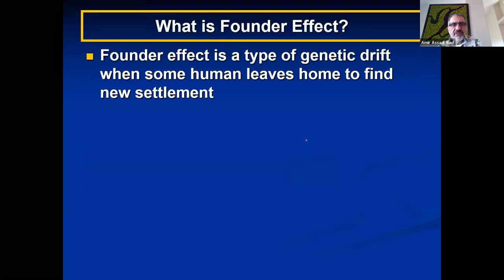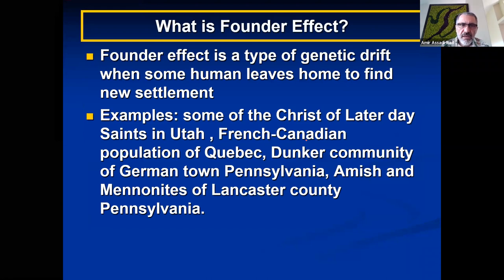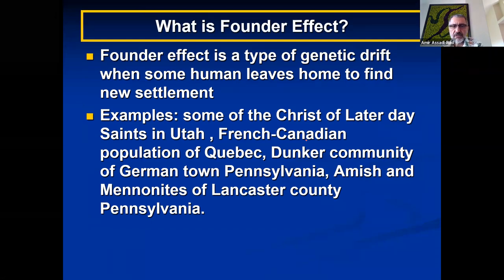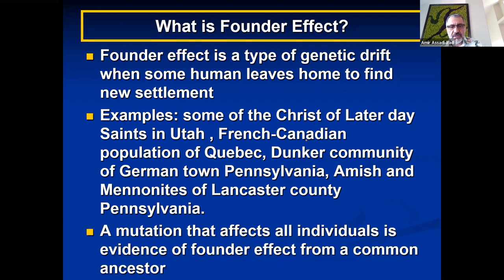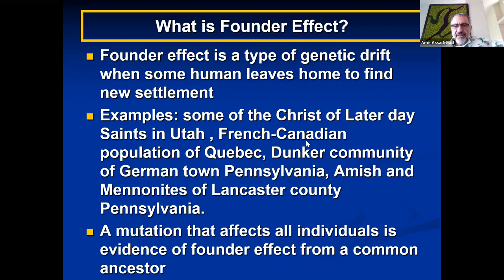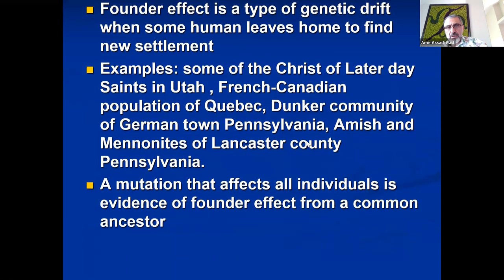The founder effect is a type of genetic drift where some humans leave home to find new settlements. Examples include the Church of Latter-day Saints in Utah, French-Canadian population in Quebec, Dunker community in Germantown Pennsylvania, Amish people, and Mennonites of Lancaster County in Pennsylvania. All of these are examples of founder effect — they do not breed with outsiders in most cases. A mutation that affects all individuals is evidence of a common ancestor.